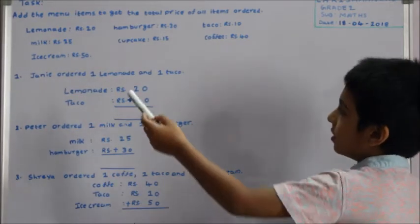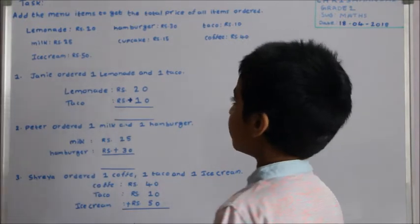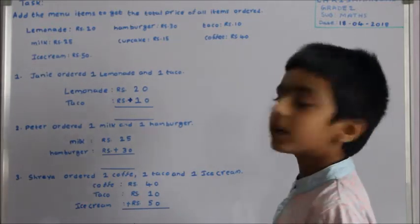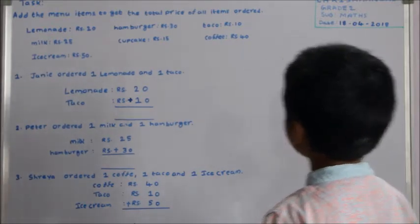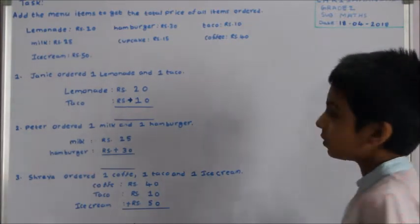Let's read the items. Lemonade: rupees 20, milk: rupees 25, ice cream: rupees 50, hamburger: rupees 30, cupcake: rupees 15, taco: rupees 10, coffee: rupees 40.